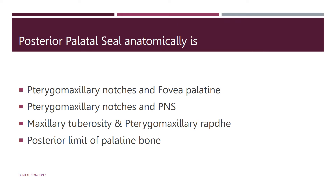The posterior palatal seal anatomically is formed by post palatal seal and pterygomaxillary seal. The post palatal seal extends from one maxillary tuberosity to the other, and pterygomaxillary seal extends through the pterygomaxillary notch continuing 3-4 mm anterolaterally, approximating the mucogingival junction. The fovea palatinae are indentations in the soft palate created by the collection of ducts from mucous glands located near the midline.